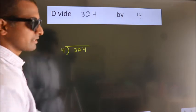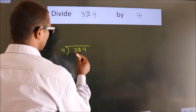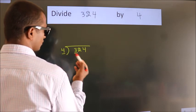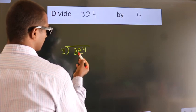Next, here we have 3, here 4. 3 is smaller than 4, so we should take 2 numbers: 32.